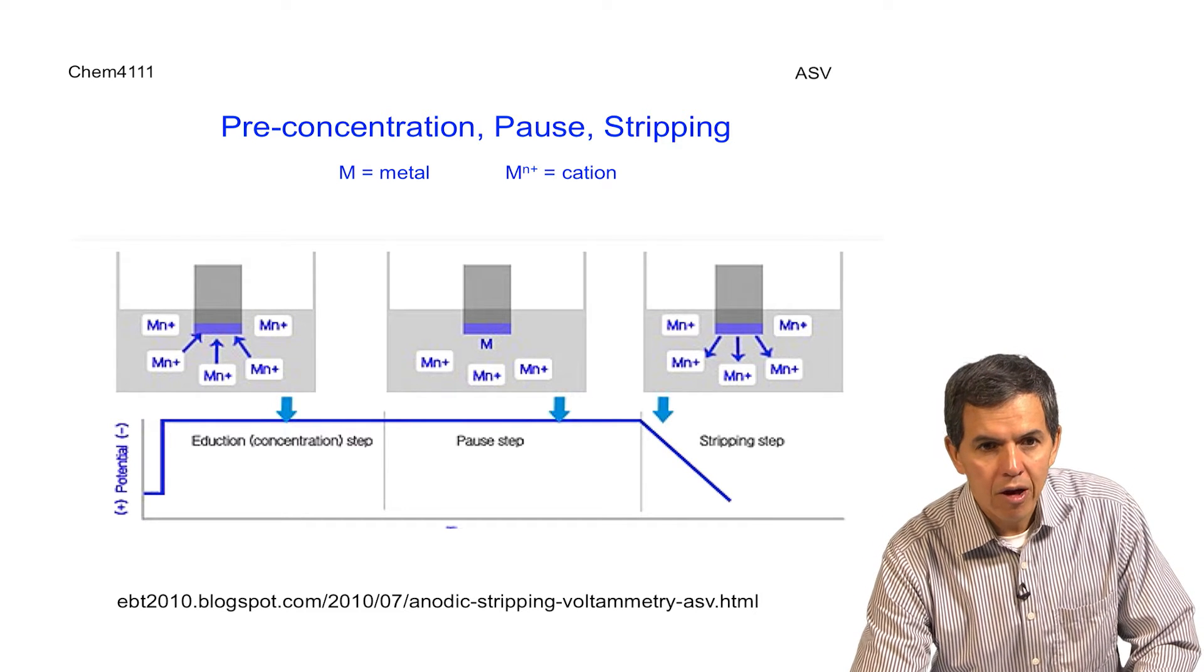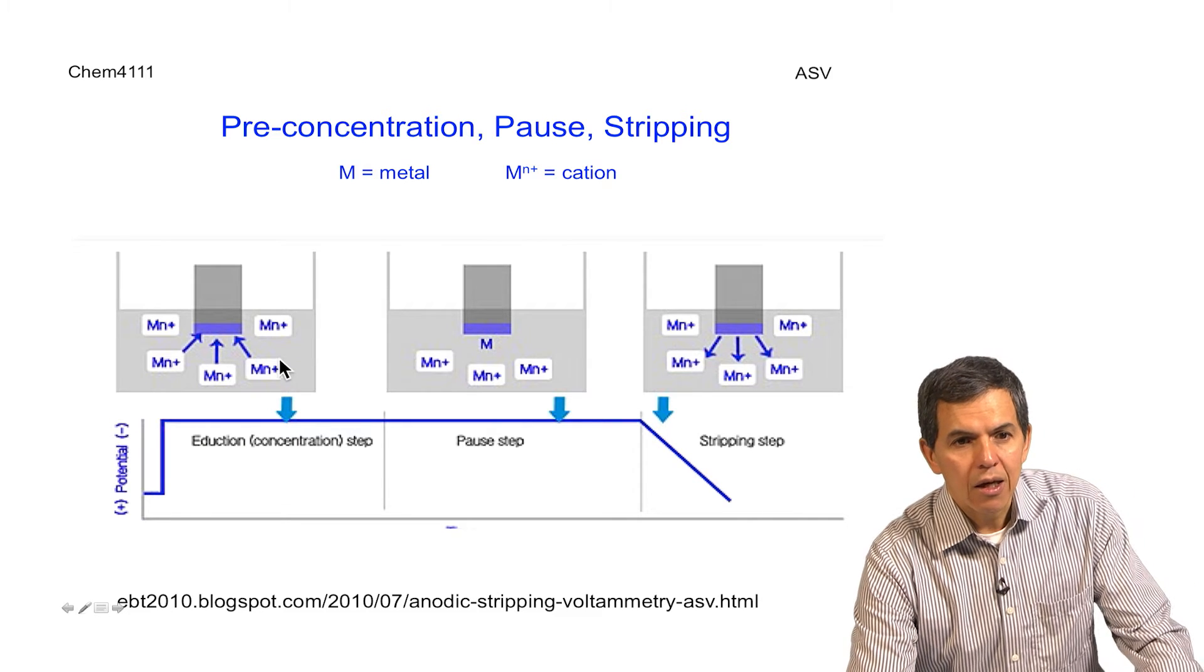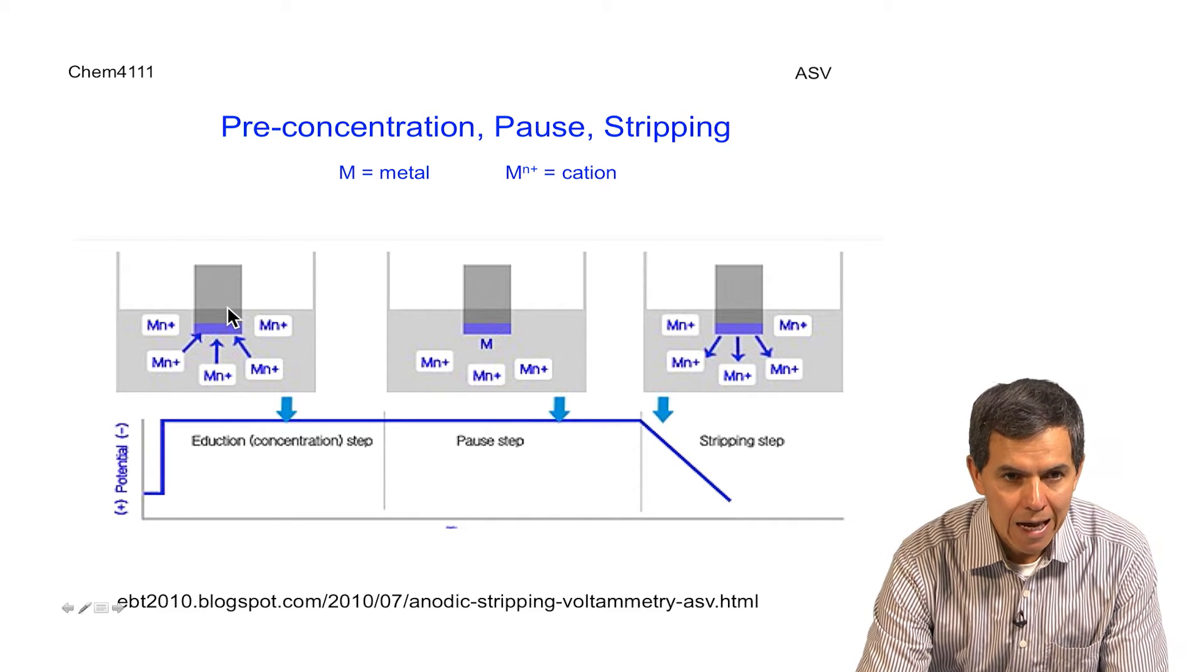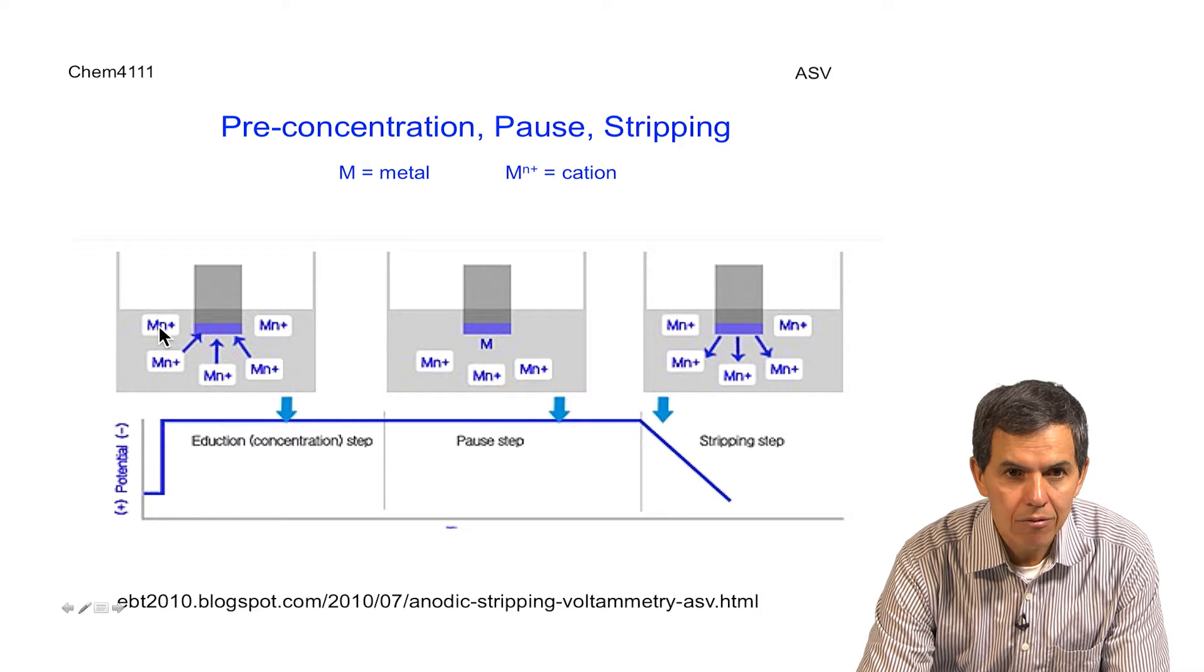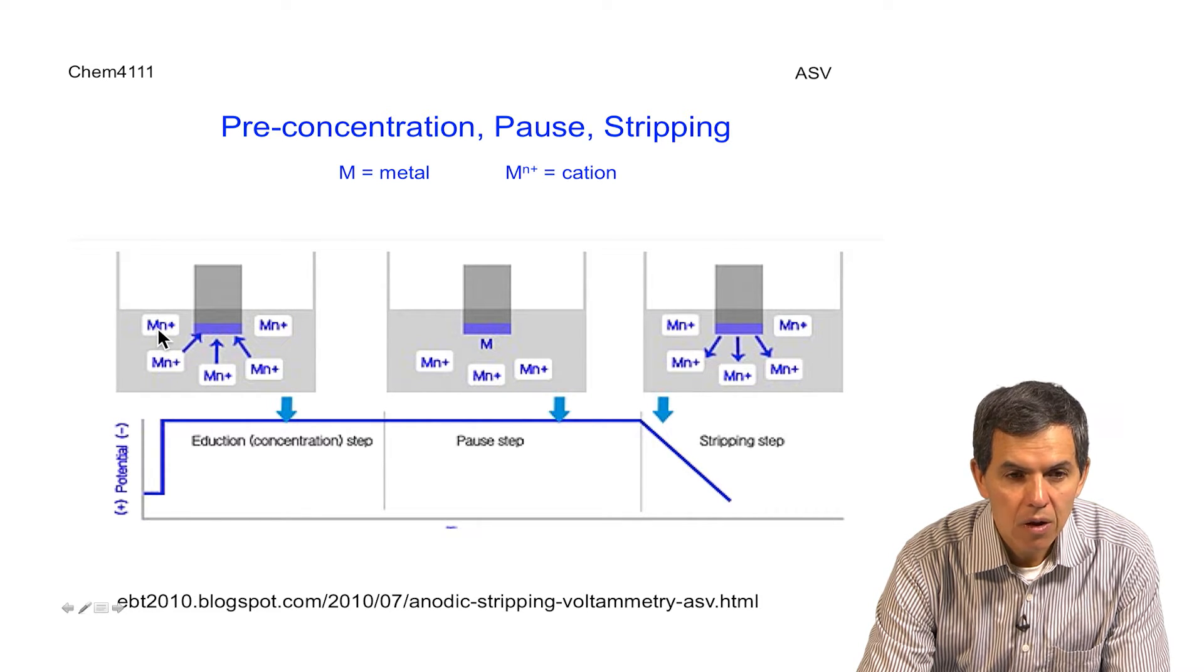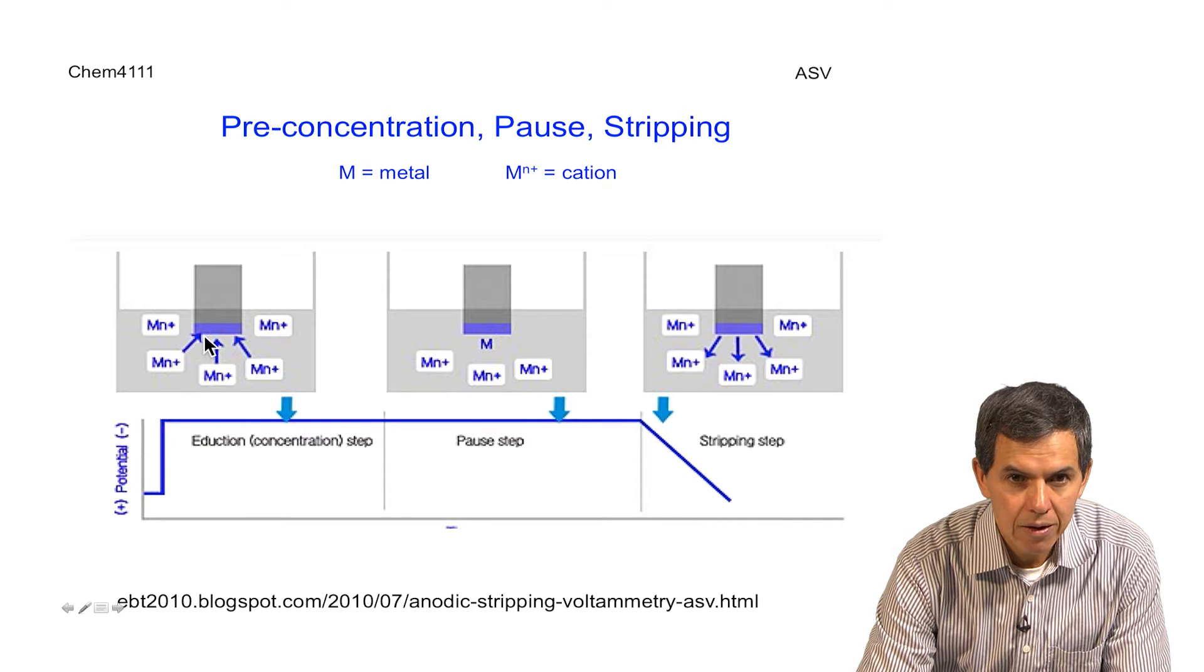What we have in this diagram are each of these different steps. Here we have the representation of an electrode, and here we have the representation of a metal represented by a cation, M N+. In the first step, the pre-concentration step, the cations are deposited onto the surface of the electrode to form the metal M.